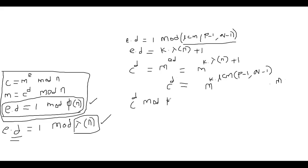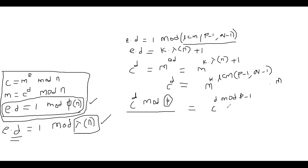Let's compute c^d mod p. I'll assume m is not a multiple of p, so we can apply Fermat's theorem. To compute c^d mod p, we can write c^(d mod p−1) mod p — this is a property of the group Z*_p. So we need to compute d mod (p−1).